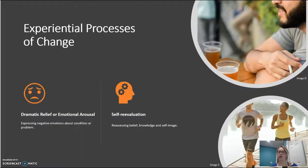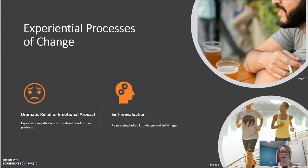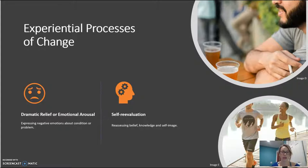Dramatic relief, or emotional arousal, is the expression of negative emotions associated with their need for change — the fear surrounding their condition or any anxiety about what risks are associated with it. This can be a completely normal human reaction to finding out a new diagnosis and a general fear for their future health. For example, 'If I don't quit smoking, I can get emphysema or cancer — I could even die.' That is a normal dramatic relief and emotional expression of their potential condition.